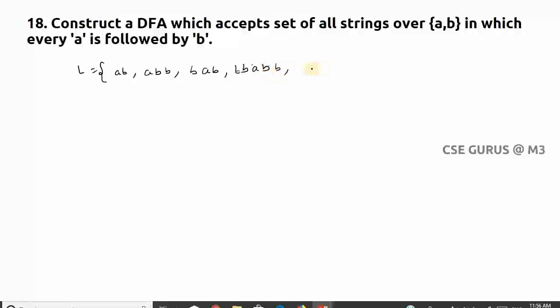Whenever you find 'a' it needs to be 'b'. If I find 'a' here there must be 'b'. So you cannot find 'aa' as a substring anywhere in these strings. So this is the logic - that means every 'a' is followed by 'b'.